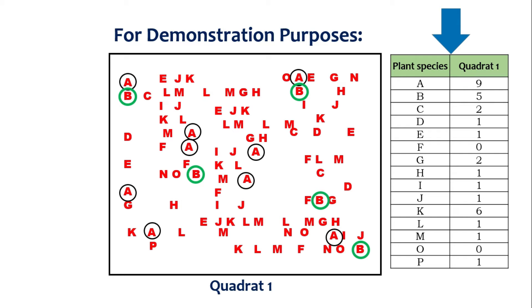These are the final or complete data for the species and the number of individuals of each species present in Quadrat 1, so Quadrat 1 data is complete.